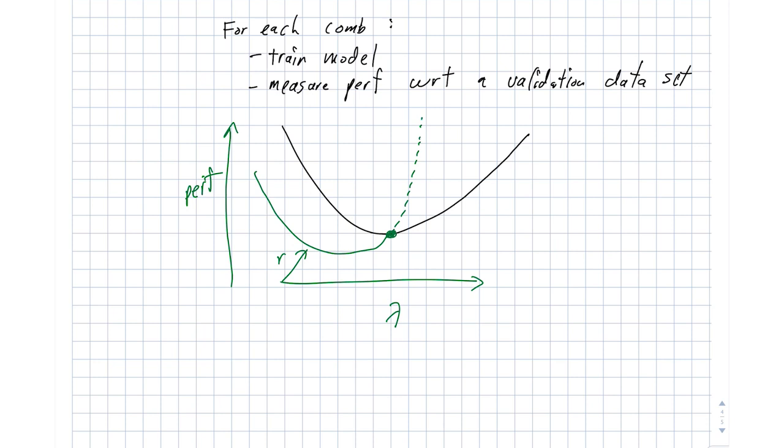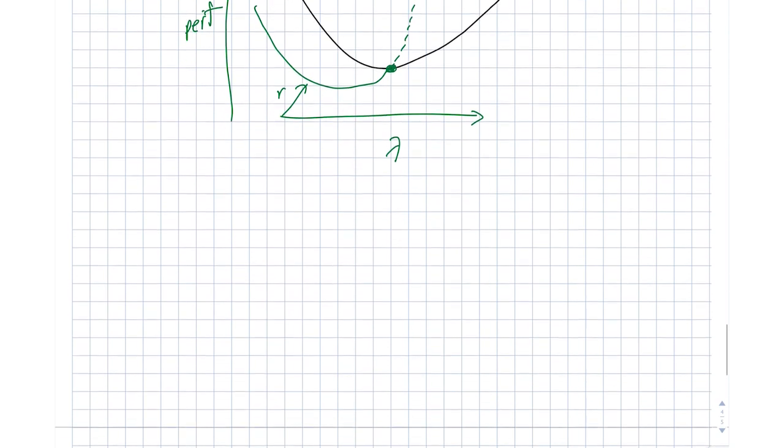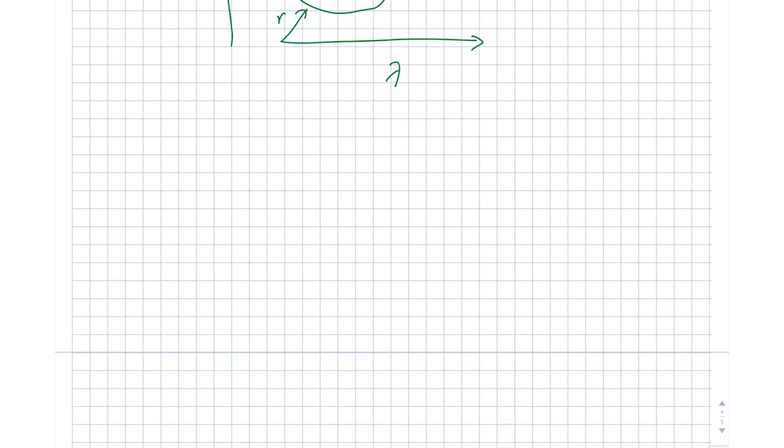Just as with the single hyperparameter, we do care about edge effects. So if we don't actually capture the bowl, but instead we end up with a scenario where the bowl is cut off based on our choices of what range to search, if we imagine continuing to increase lambda from this point, performance might continue to improve. Then this is again, a scenario where we want to increase the range of possible values that we want to cover.